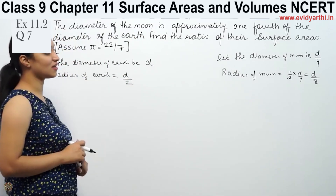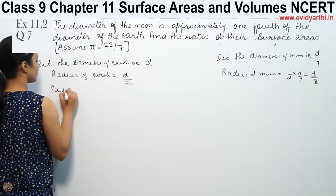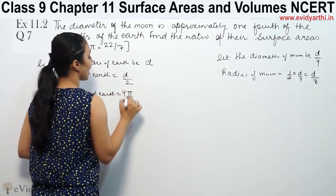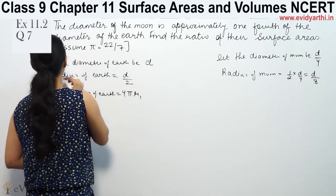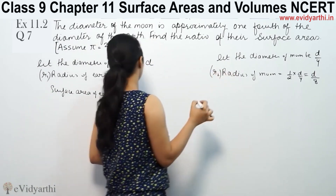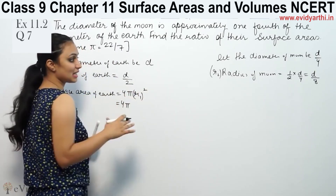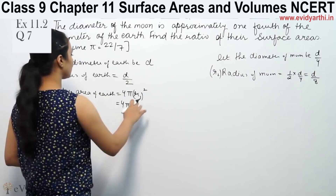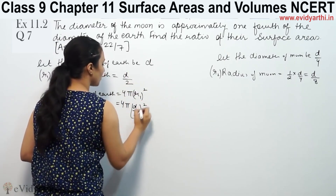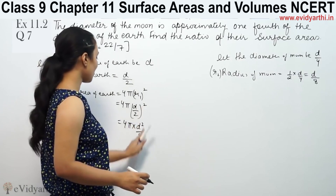Now to find the ratio of surface areas, we use the formula 4πr². The surface area of earth uses radius r1, so it is 4π r1 squared. When we take the ratio, the 4π values will cancel. Substituting r1 = D/2, the surface area of earth is 4π into D squared by 4.